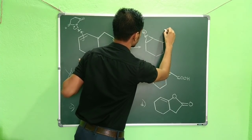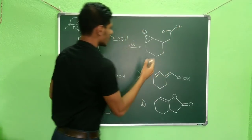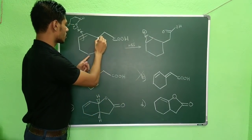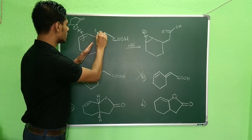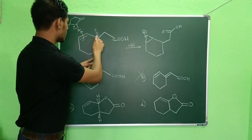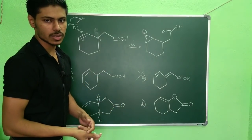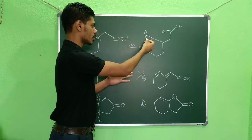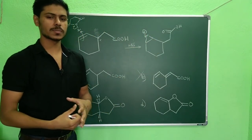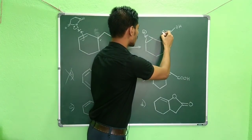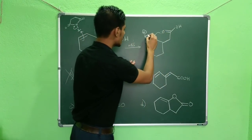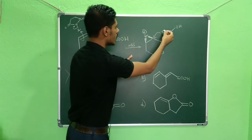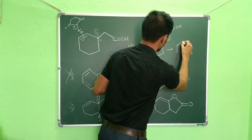With the bromonium ion formed, the carboxylic acid group is positioned to attack. An interesting point is that no stereochemistry is specified in the starting material, yet the answer options show specific stereochemistry. The key insight is that regardless of whether the bromonium ion forms from the top or bottom face, the lone pair attack always occurs from the back side.